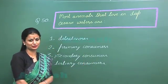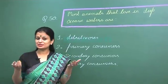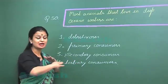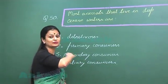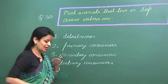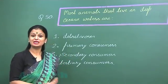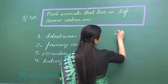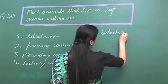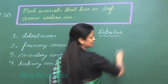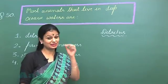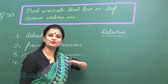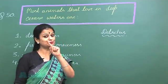Now when the producers and consumers die, their dead remains start accumulating on the oceanic floor. At the bottom, the dead remains of the plants and animals accumulate — this dead remains represents detritus. So detritus becomes the source of energy at the bottom of the water body.